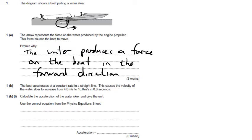Question 1A is an acceleration calculation. It tells us the velocity of the water skier increases from 4 metres per second to 16 metres per second in 8 seconds.